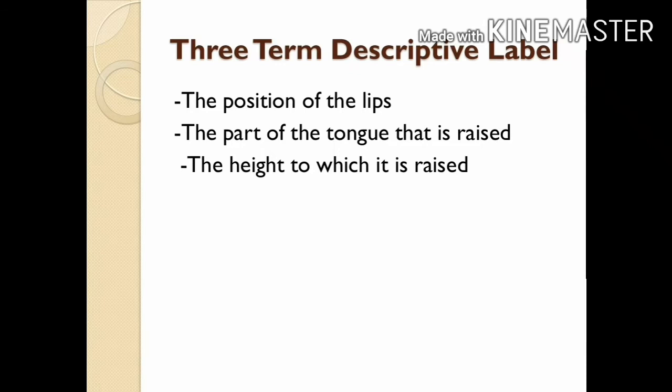All English vowels can be described with the help of three-term labels. The three terms indicate: the position of the lips — rounded or unrounded; the part of the tongue raised — front, back, or central; and the height to which it is raised — close, open, half-close, or half-open.